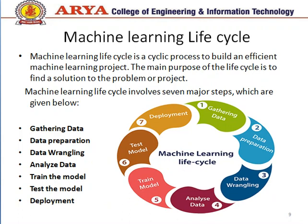This is the machine learning life cycle. There are seven steps to complete the process. The machine learning life cycle is a cyclic process to build an efficient machine learning project, with the main purpose of finding a solution to a problem. To solve a problem we create a machine learning system called a model, which is created by training. The first step is gathering data — without data we cannot do anything, since machines learn from data. The goal of this step is to identify and obtain all data related to the problem.